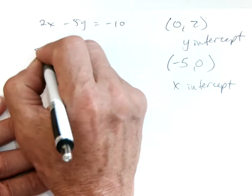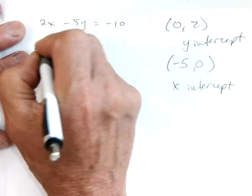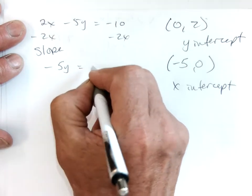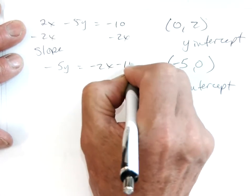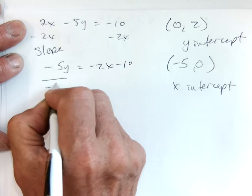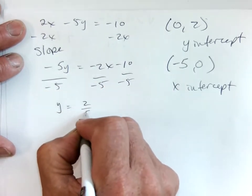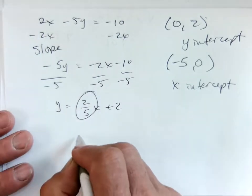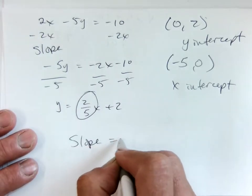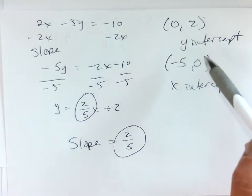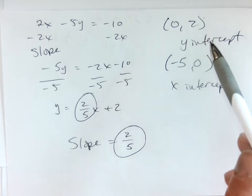So our slope, just going to go minus 2x, minus 2x, negative 5y equals negative 2x minus 10. Divide by negative 5, I'll get y equals 2 fifths x plus 2. So there's my slope. You could have graphed these 2 points and got the slope as well. Does that make sense?